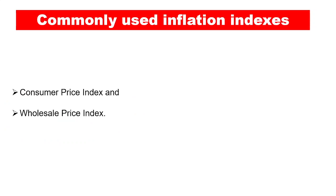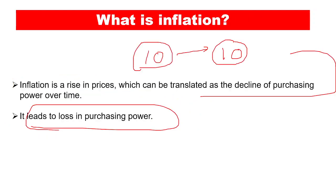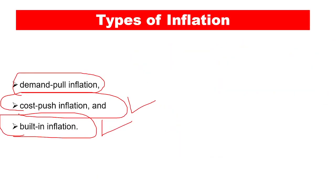Inflation is measured through some indexes. The first is the Consumer Price Index (CPI). Inflation measured in terms of CPI is called retail inflation, and the figures we have discussed — 6.52 percent for January — relate to this. The other kind of inflation index is the Wholesale Price Index (WPI). When inflation occurs at the wholesale level, it is known as wholesale inflation. These are the two ways in which we calculate inflation, and the retail inflation stood at 6.52 percent for the month of January.